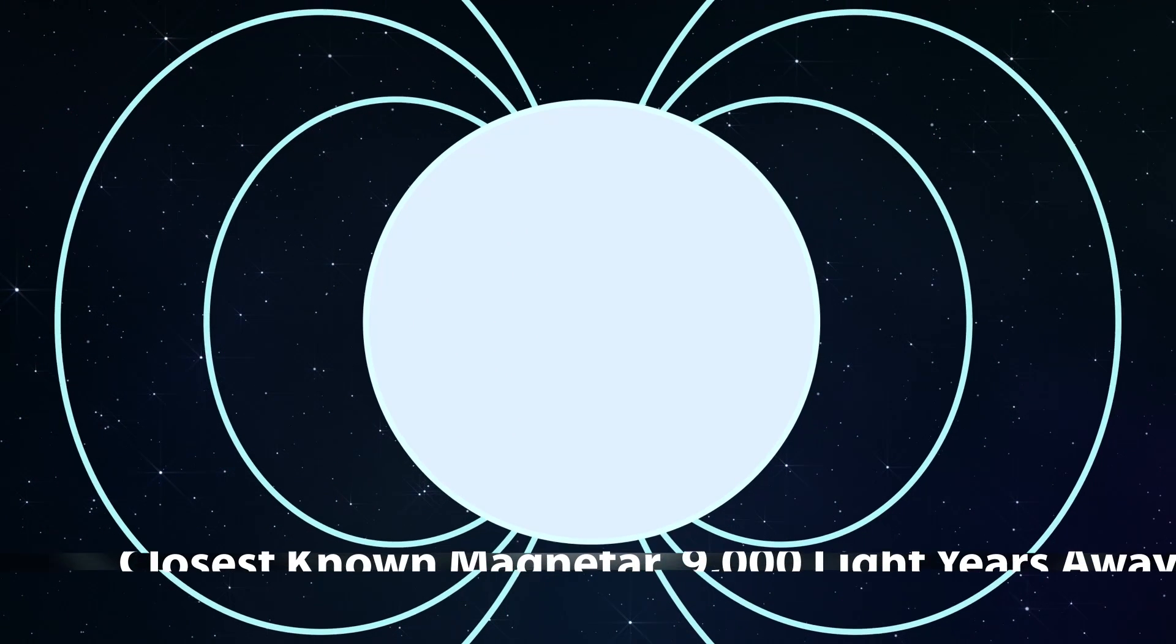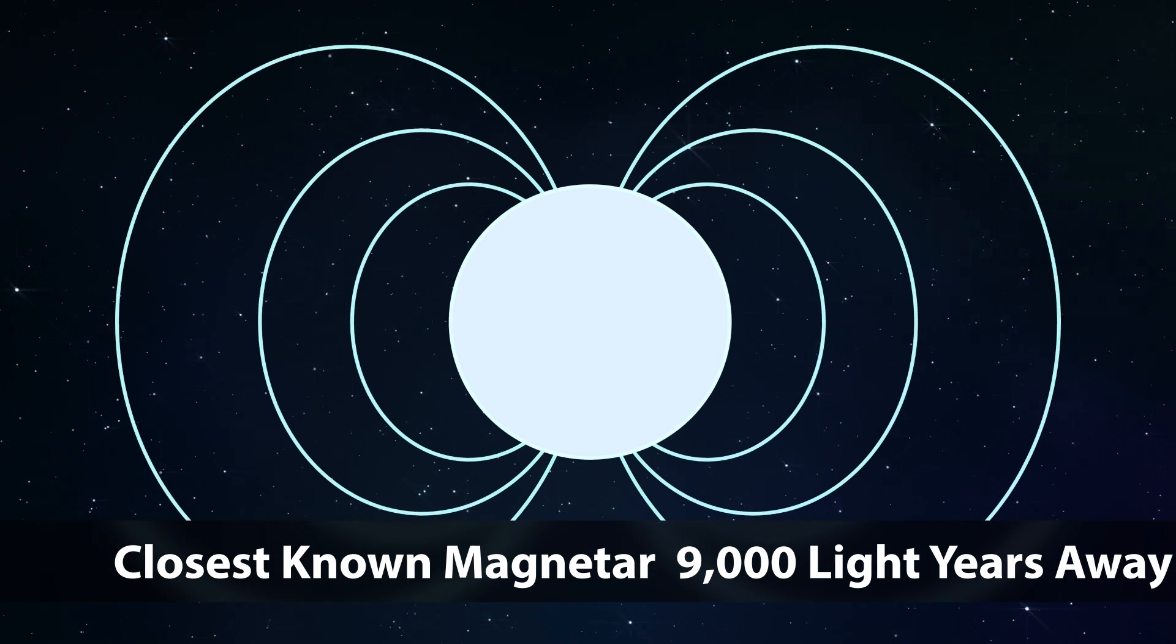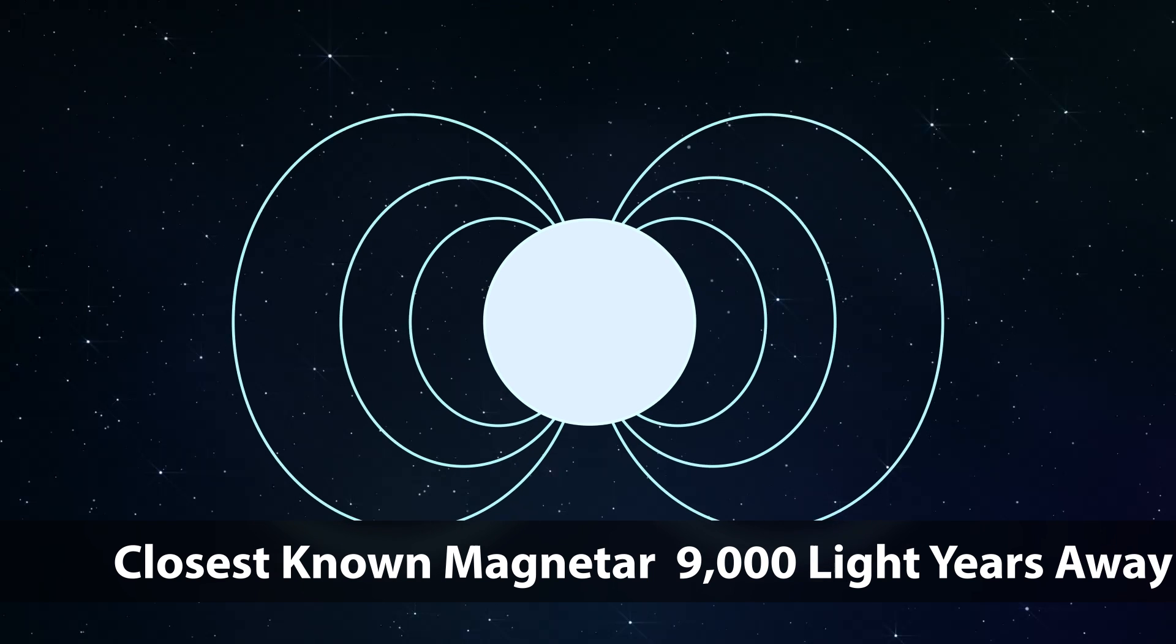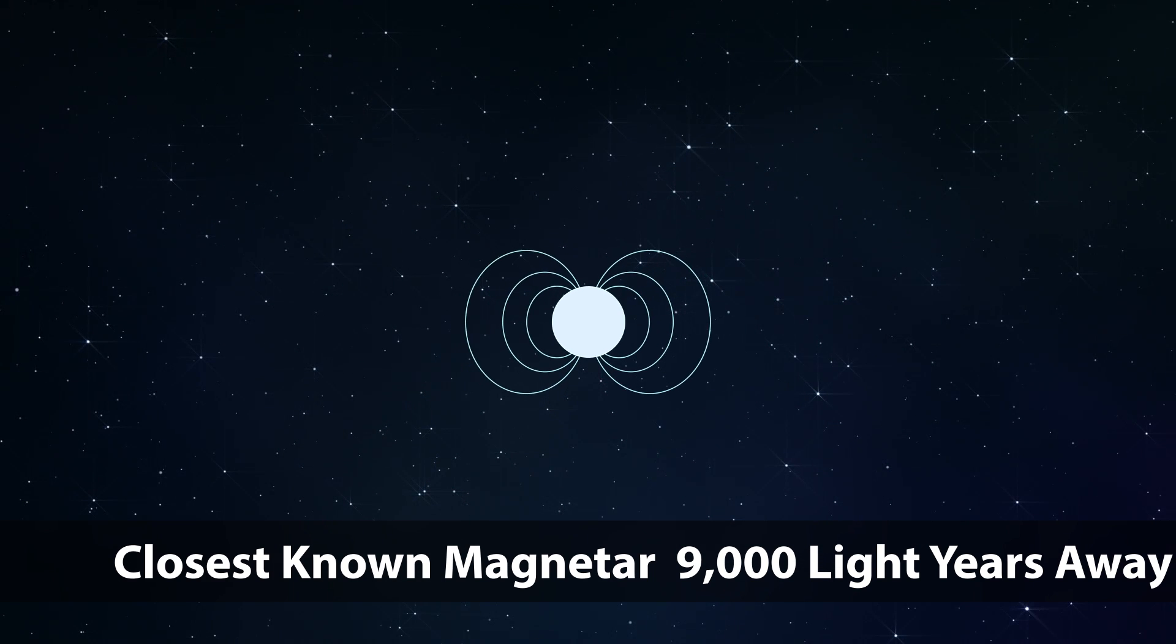Luckily for us, however, the closest discovered magnetar to Earth is 9,000 light years away. As scary as magnetars are, we can thankfully remain more fascinated by them instead at a safe distance away. For now.